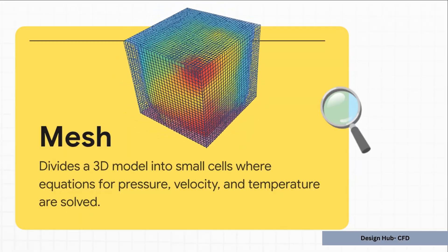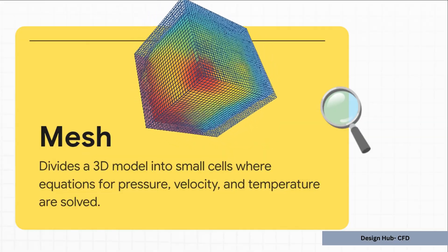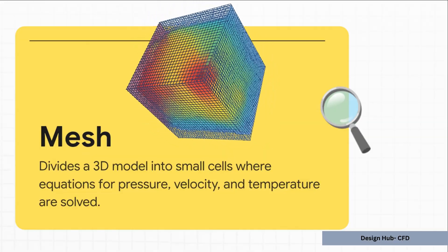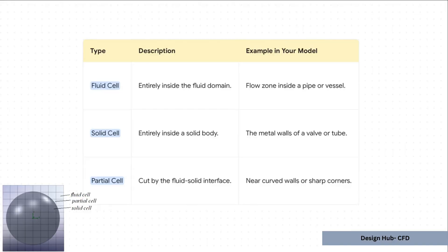Inside every single one of those tiny cells, the software is crunching the numbers on those complex equations that tell us how the fluid is going to behave. So SolidWorks uses what's called a Cartesian mesh, which is just a fancy way of saying it thinks in little cubes. It looks at every single one of these cubes and sorts it into one of three buckets. You've got your fluid cells, that's where all the action is happening.